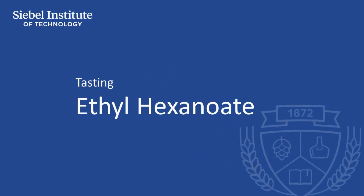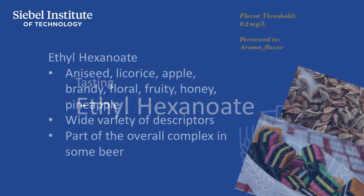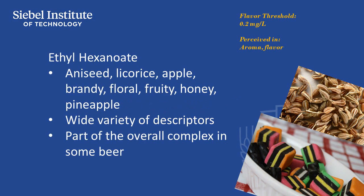Ethyl hexanoate is most often described as licorice or anise seed in aroma, but it's one of many compounds that have a wide variety of descriptors depending on the individual taster. As with other esters, it's usually found in lower concentrations as part of an overall ester profile.